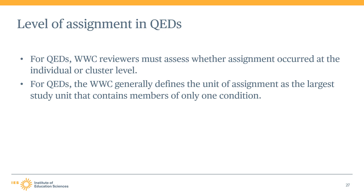For example, imagine study authors had compared student outcomes in schools implementing a dropout prevention program versus comparison schools. The unit of assignment in this example is schools because each school only has intervention students or only comparison students — this is a cluster level assignment study. In contrast, if some schools have both intervention and comparison students, then the unit of assignment would be students and the study would be an individual level assignment study.